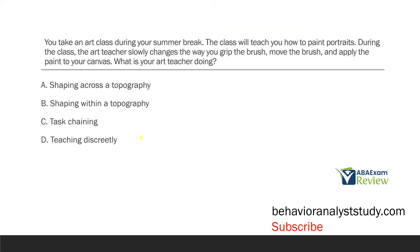You take an art class during your summer break. The class will teach you how to paint portraits. During the class, the art teacher slowly changes the way you grip the brush, move the brush, and apply the paint to your canvas. What is your art teacher doing? We're looking at the art teacher relative to your behavior. We know you're taking an art class and you're learning to paint portraits. During the class, the art teacher is changing the way you grip the brush, move the brush, and apply the paint — many different aspects of your painting.